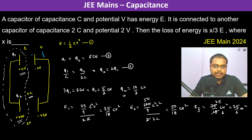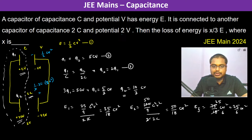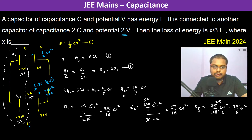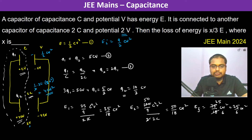The initial energy of the first capacitor is half into C V² and the second capacitor has potential 2V, so its energy is half into 2C into (2V)² which equals 4CV². Therefore the total initial energy is 4CV² plus half CV², which equals 9/2 CV².